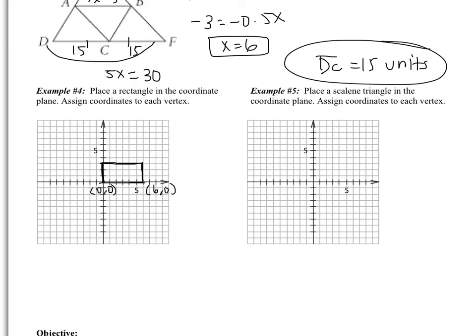This is (6, 0). This is (6, 3). And this one is (0, 3). And that's it. That's a coordinate proof.